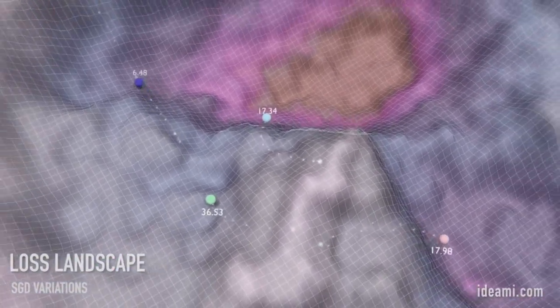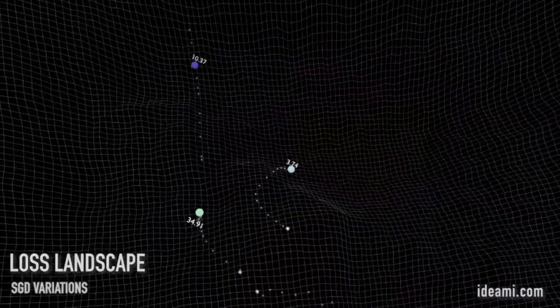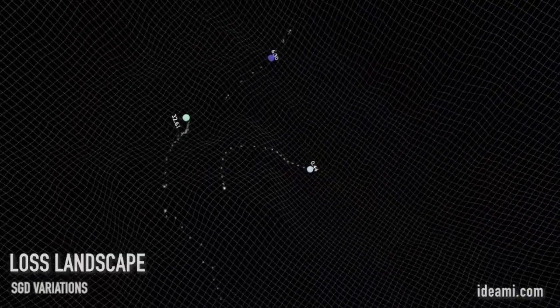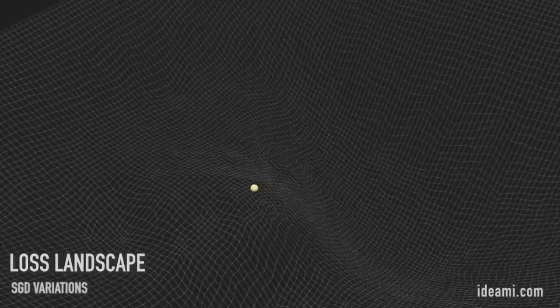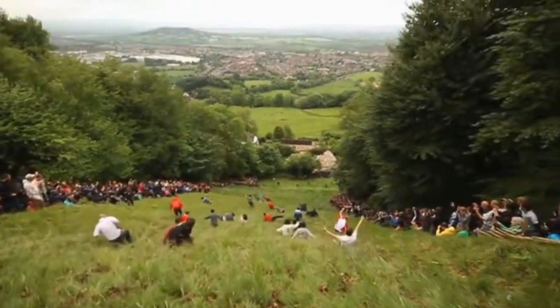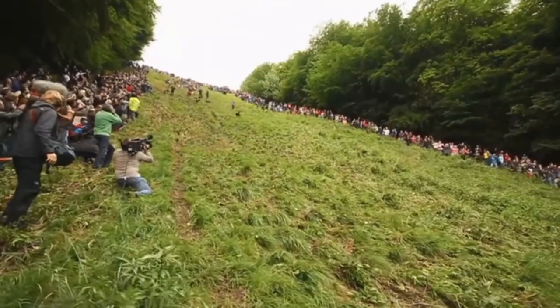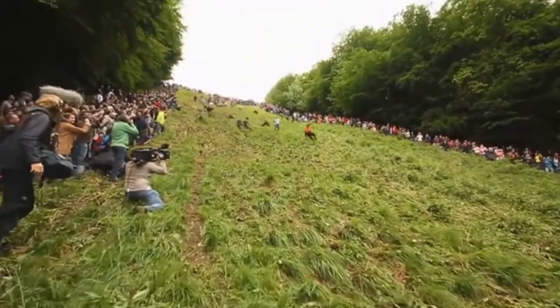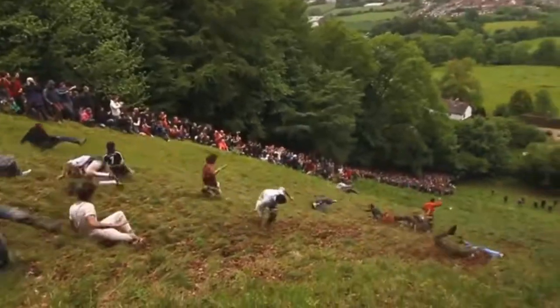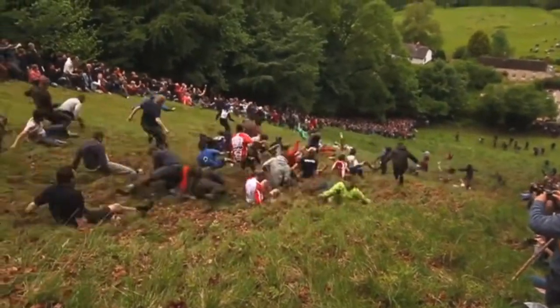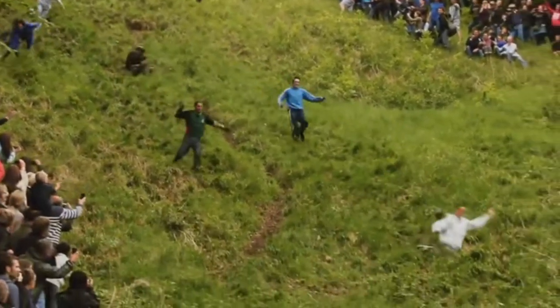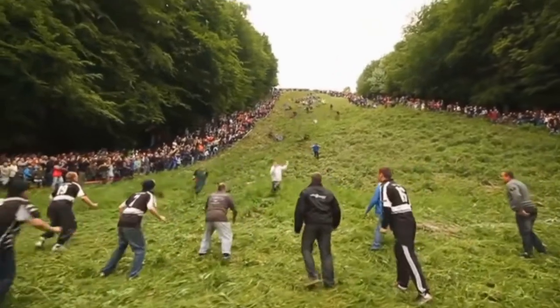Momentum helps with that aspect. The term momentum is brought from physics where you can think of the parameter value as being a ball traveling through space. When you introduce momentum, it is similar to a cheese roll race. Even if there's a lot of bumps in the hill, the ball will keep rolling roughly in the same direction. This prevents unnecessary oscillation and will help a lot in neural network training.